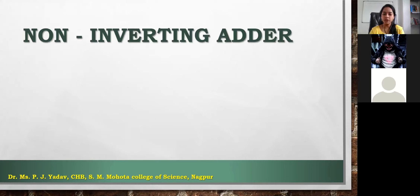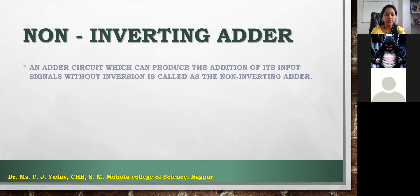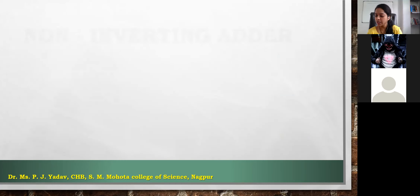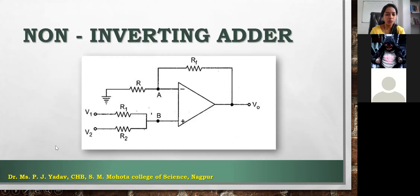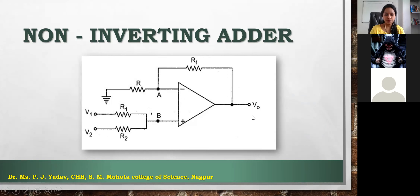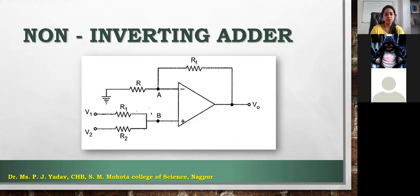Now we will see how the non-inverting adder works. In the non-inverting adder, we apply the two voltages to be added at the non-inverting end — that's why it is called the non-inverting adder. At the inverting end the circuit is the same: the feedback resistor, input resistor are there, and at the output we measure voltage Vout. Using the same formula and putting the values of I1, I2, and IF into the equation, you will get the addition of two voltages V1 and V2.